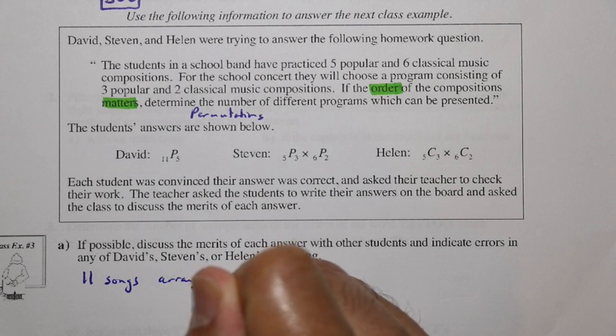But let's talk about each one here now. So we have David, who says 11P5. Well, this is like saying take 11 songs, 11 of these songs, and arrange 5 of those songs in order. Now, what he's missing, and what the error of David has, is that he's missed this fact that we need 3 popular and 2 classical music compositions. Remember, there are 5 popular and 6 classical music. So here, if he just takes all the 11 songs and then arranges 5 in order, he's also including cases where it could be all 5 classical music.